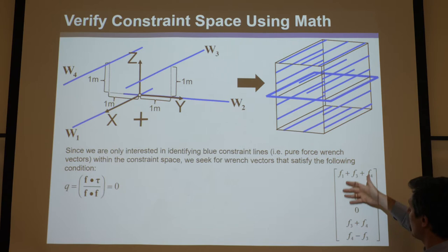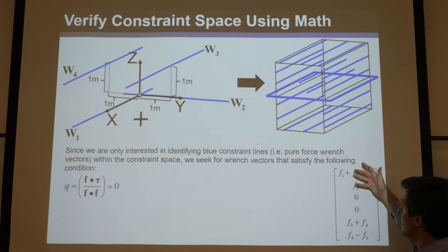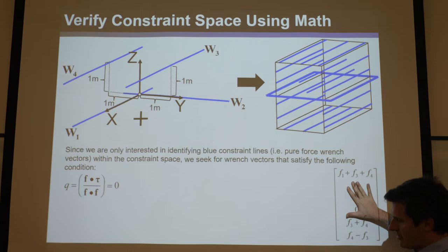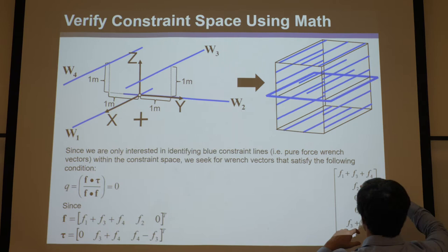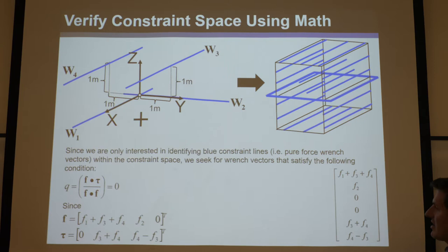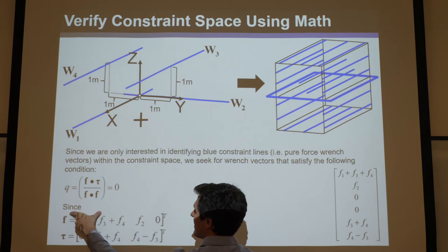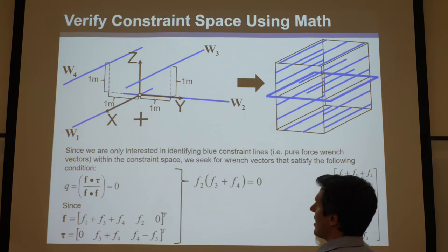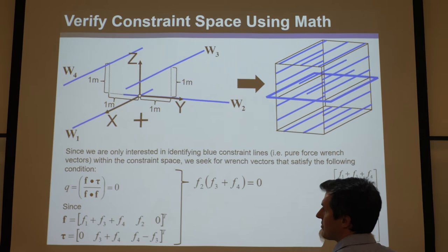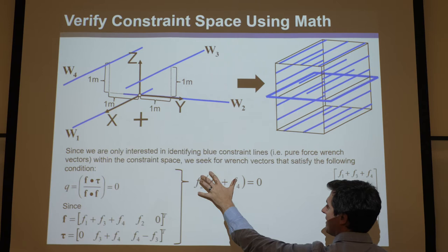We only care about finding the blue lines, so we need to filter this out. This contains all the orange, black, and blue lines with any Q value. To find just the blue spaces in this mathematical representation, you take the F vector — those three components — and the tau vector — those three components — dot product them both, divide, and set it equal to zero. Since if the numerator is zero it's zero, you just dot product F with tau. Line up corresponding components, multiply and add them, and find this must equal zero.